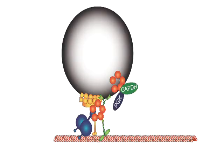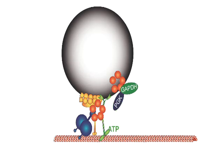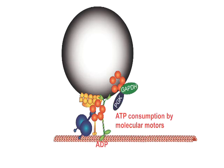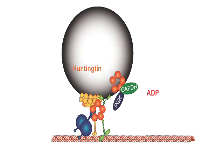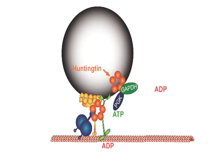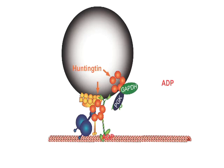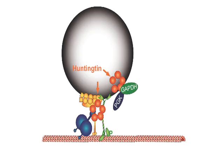Together, our study demonstrates that the glycolytic enzyme GAPDH provides onboard energy for the fast axonal transport of vesicles. We also show that Huntingtin protein couples energy production to energy consumption by the molecular motors. This work may also have implications for understanding the axonal transport defects that occur in Huntington's disease and in other neurodegenerative disorders.